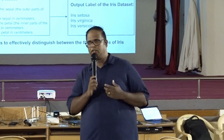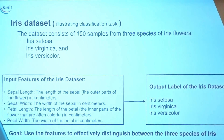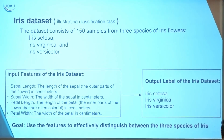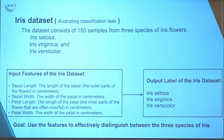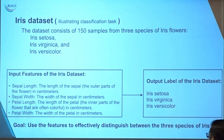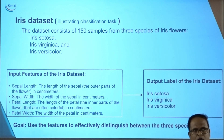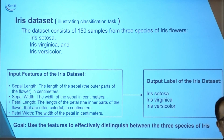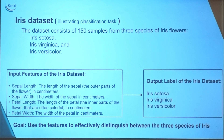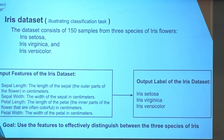The input for this model has four features: sepal length, sepal width, petal length, and petal width. There are four features and, using those features, our goal is to effectively distinguish between the species. This dataset contains 150 records of three different species, and we need to classify which species the input belongs to. This is generally called classifying based on the features.